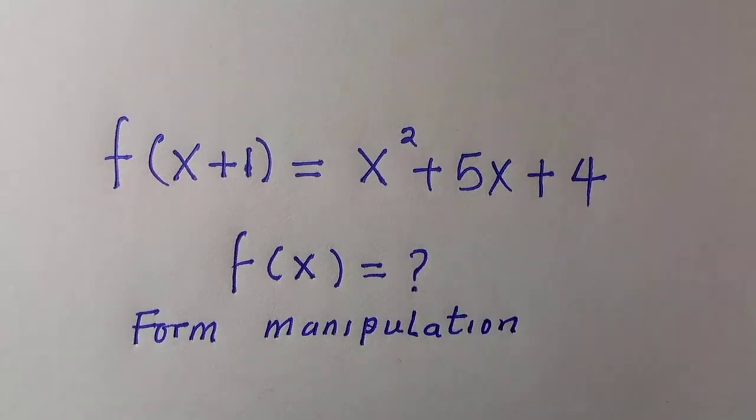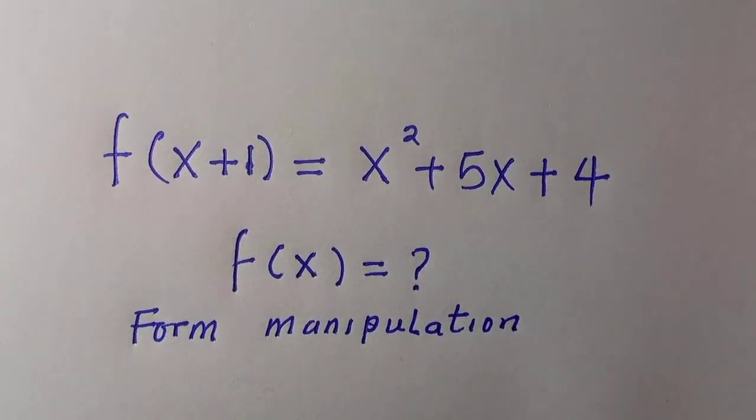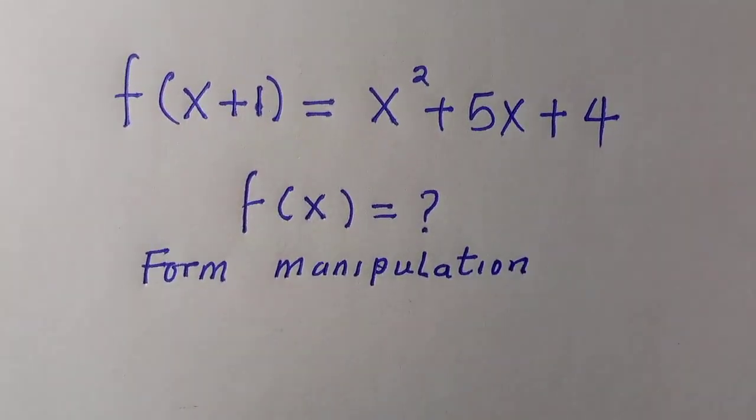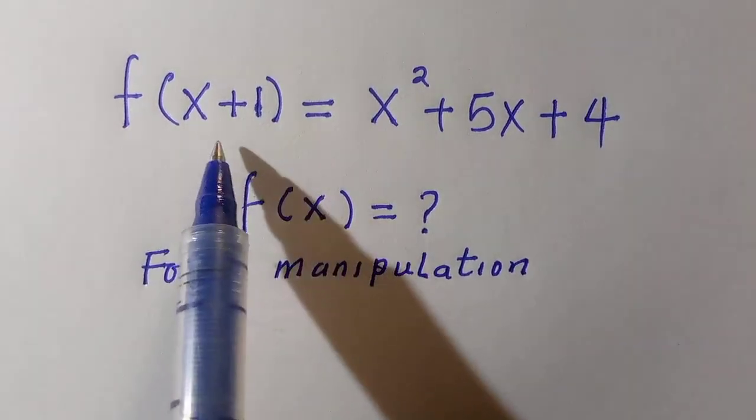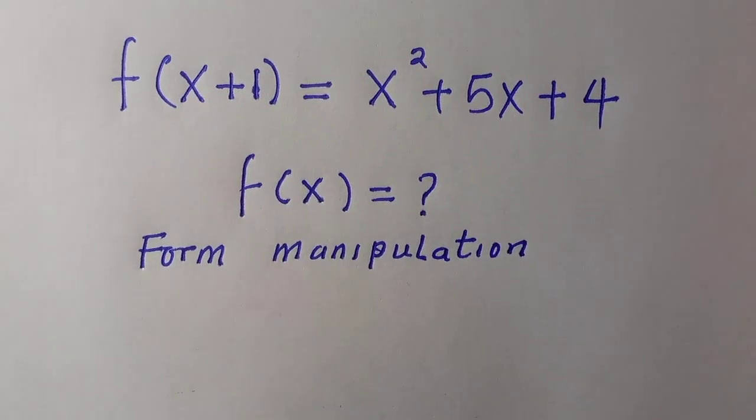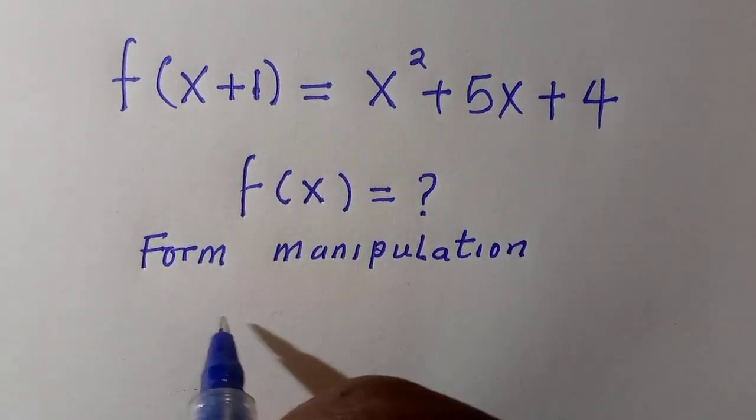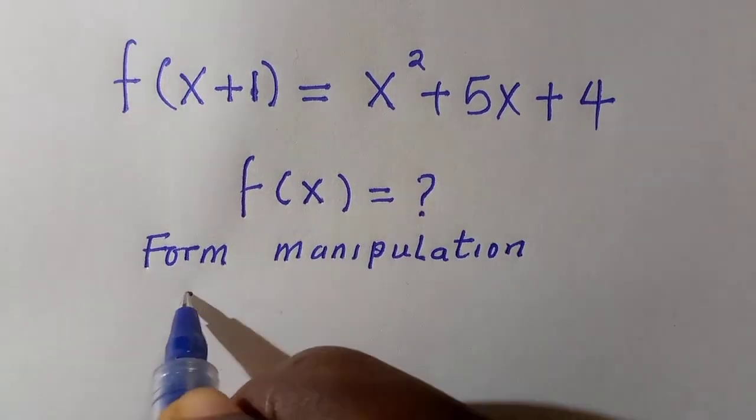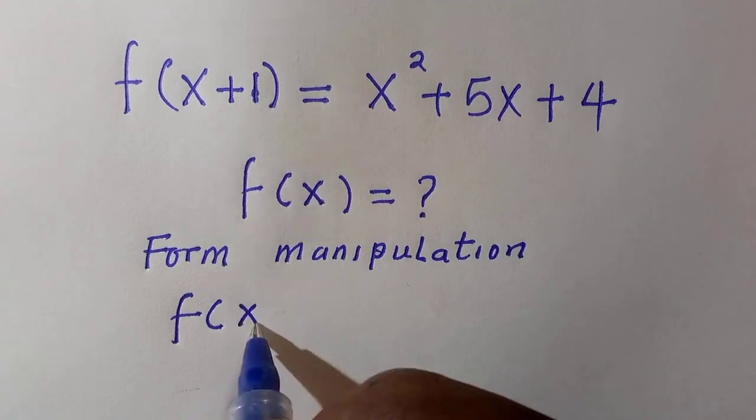And here I'm going to apply the form manipulation method. So we are going to make sure that what is in the function is what we have at the other side. So let's get into it. If you consider from the left-hand side, which is f(x+1),